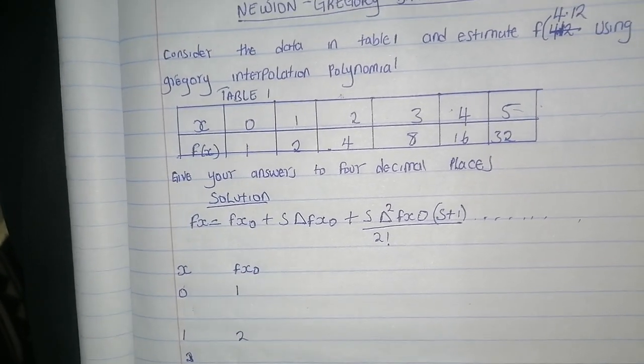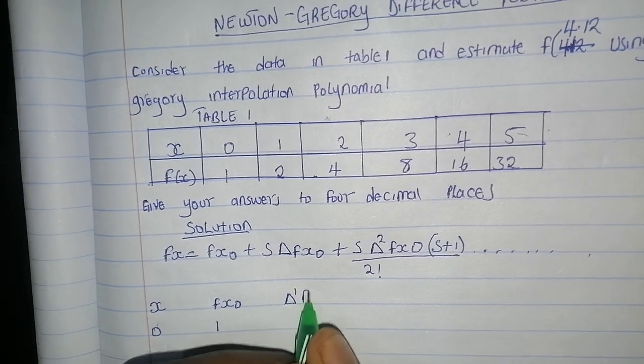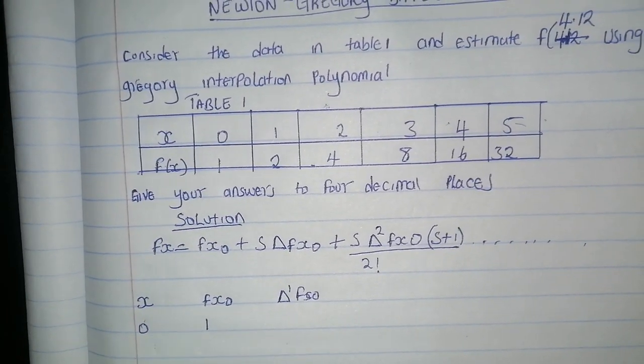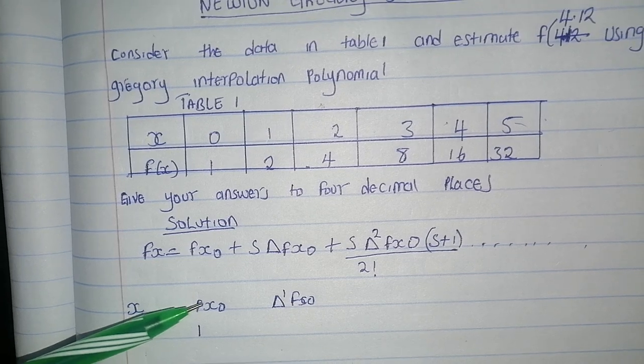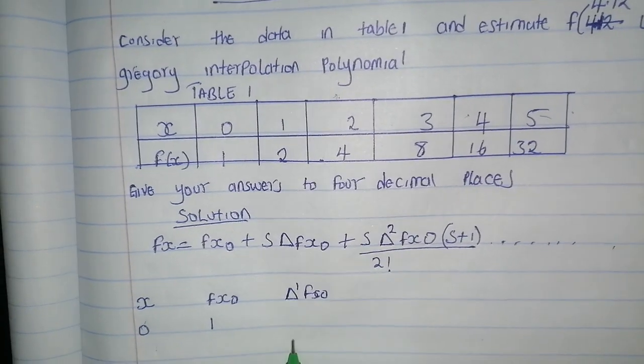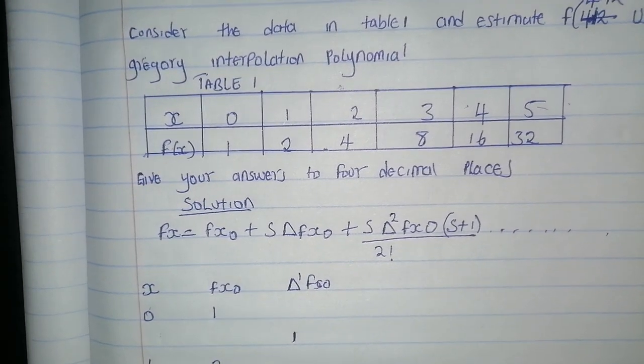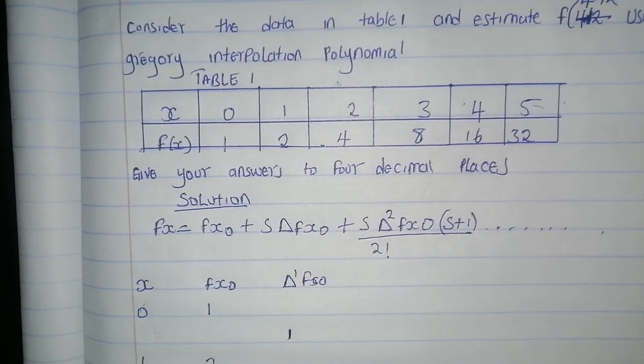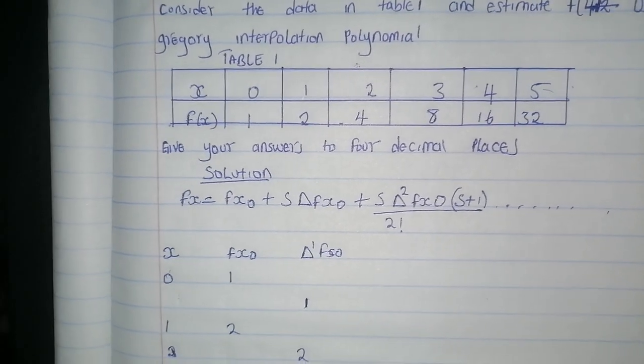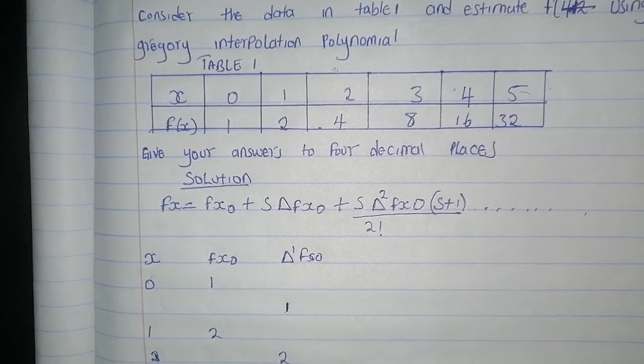When finding delta f(x0), we use the f(x) values. You take 2 minus 1, which gives 1. Take 4 minus 2, which is 2. 8 minus 4 is 4. 16 minus 8 is 8. 32 minus 16 is 16.